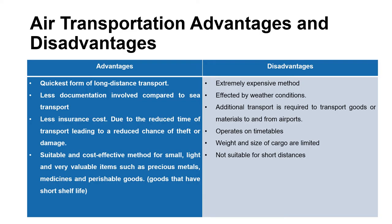Advantages of air transportation: this is the quickest form of long distance transport, especially compared to sea transportation. There is less documentation involved compared to sea transportation. Air transportation includes less insurance costs due to the reduced time of transport, leading to a reduced chance of cargo damage. It is also a cost-effective method for transporting small, lightweight, valuable items such as precious materials, medicines, and perishable goods with short shelf life.